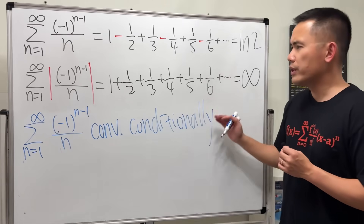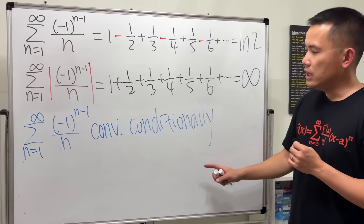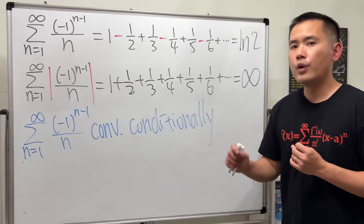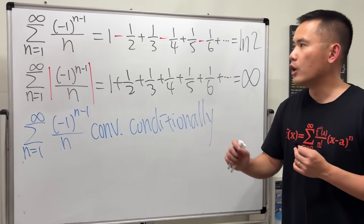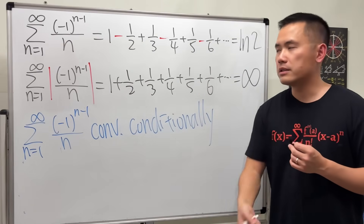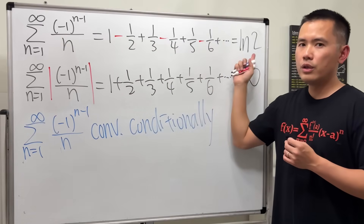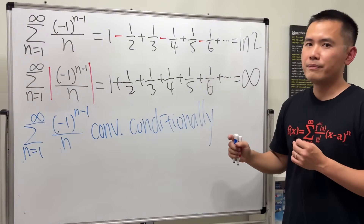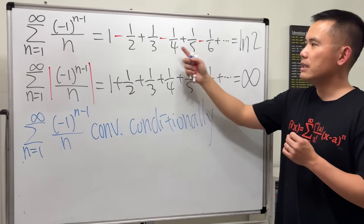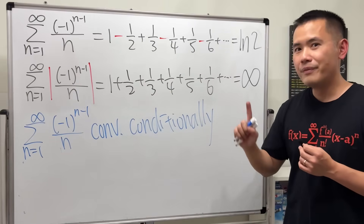Why do we care about checking for absolute convergence? Here's the deal: if we only have a series that converges conditionally, we have to be really careful with the order of the terms, because if you switch the order you can actually get a different sum. In fact, you can make the sum equal to anything you want depending on how you rearrange them.